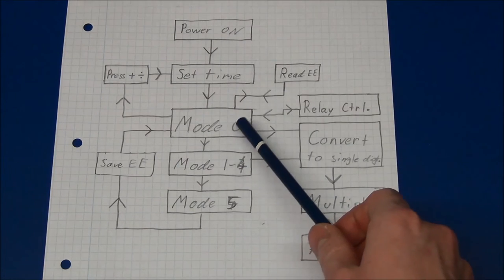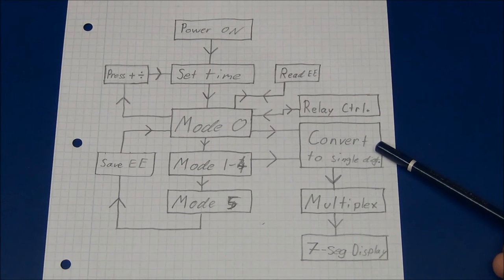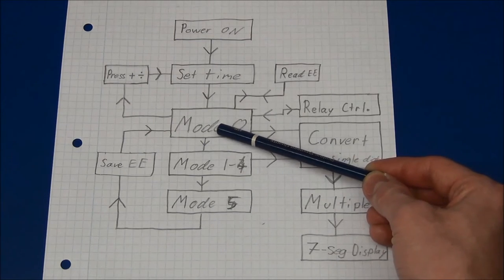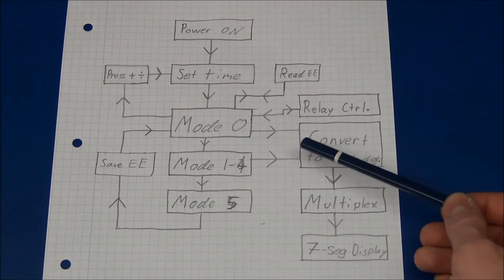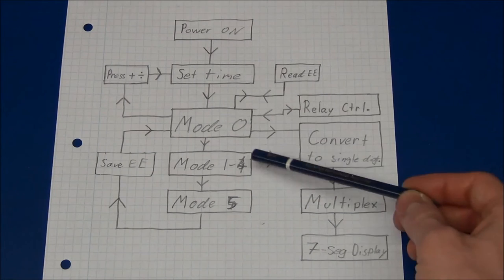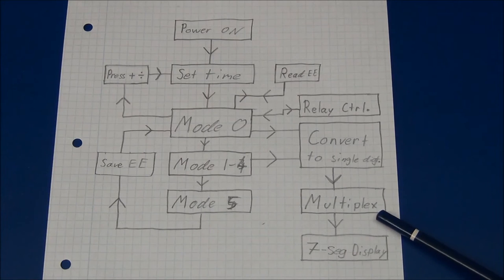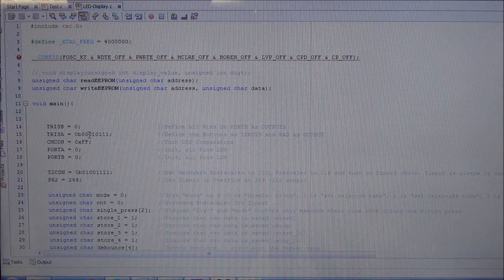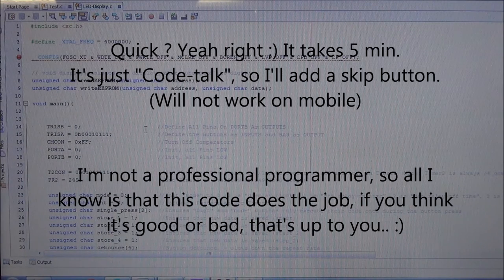There's a section that will control the relay, it will take these values and do whatever it needs to do. And of course we will need to display all this on the seven segment display, and to do this we'll have to convert it to single digits, because these are stored as double digits. If you have a 10, that's just a 10, but you will need to display it as a 1 and a 0. So this just splits it up into single digits, it will send it to the multiplexer, and it will send it out to the display. So that's basically it, and I will just very quickly scroll through the code here so we can get a basic understanding of what is going on.